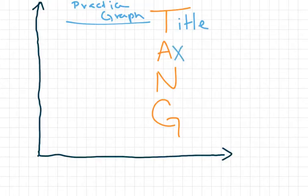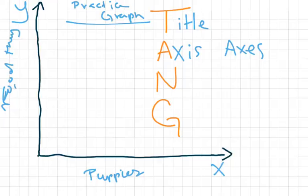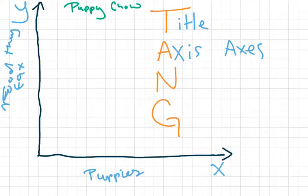A stands for axes. A single one is spelled axis. If there are more than one, plural, they're spelled axes. So you always want to label your x-axis and your y-axis. You also want to give them titles. So I would say puppies and food they eat. Since my graph now has some context, I'm going to change my title to represent what I'm talking about.